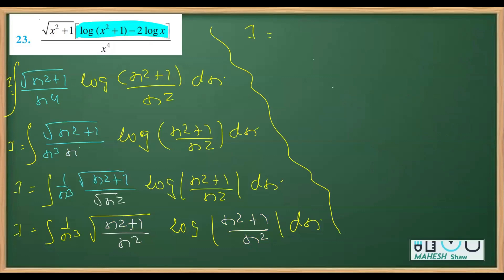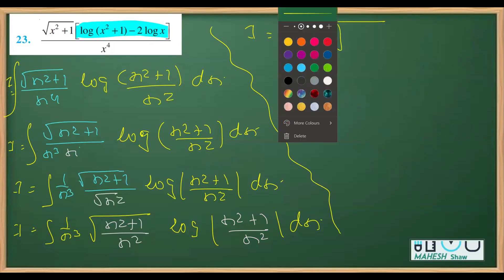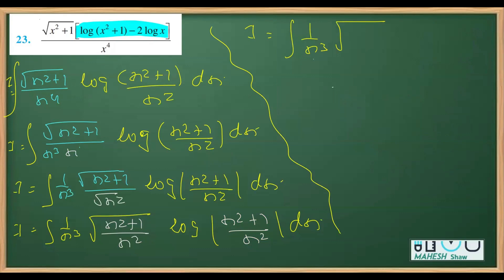So I comes out to be the integration of 1 over x³. I can split x² over x² as 1 plus 1 over x², and then we have log mod of the same split form: 1 plus 1 over x². This dx ends the setup for substitution.